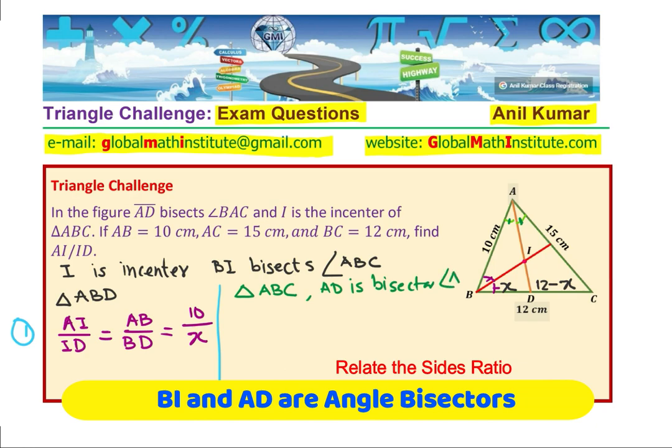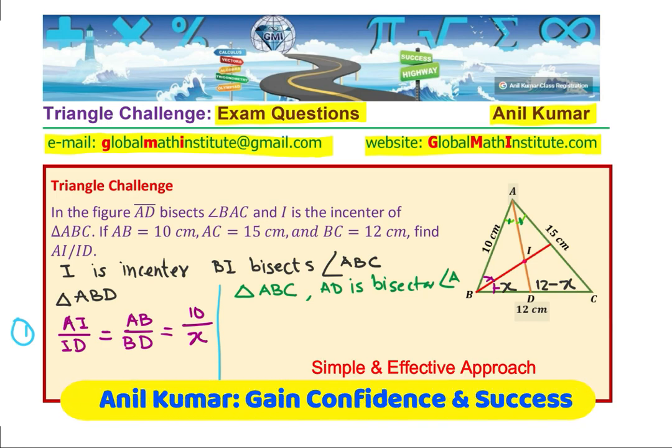In triangle ABC, AD is the angle bisector. Since we have the angle bisector AD, we can write down the ratio 10 over X as equal to 15 over 12 minus X. Now here, the only unknown is X. So from this equation we can find X.